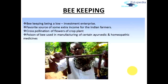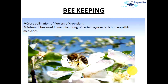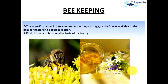Beekeeping, being a low-investment enterprise, has become a favorite source of extra income for Indian farmers, who have started doing it alongside their usual agriculture practices. Beekeeping also helps in cross-pollination of flowers and crop plants, since pollen is transferred from one flower to another by bees while they are collecting nectar. Bee poison is also used in manufacturing certain Ayurvedic and homeopathic medicines. The quality and value of honey obtained from a beehive depends upon the pasture or flowers available to the bee for nectar and pollen collection, and the kind of flowers available also determines the taste of the honey.